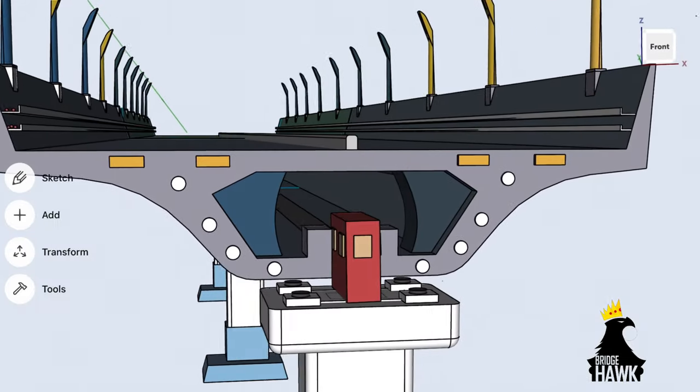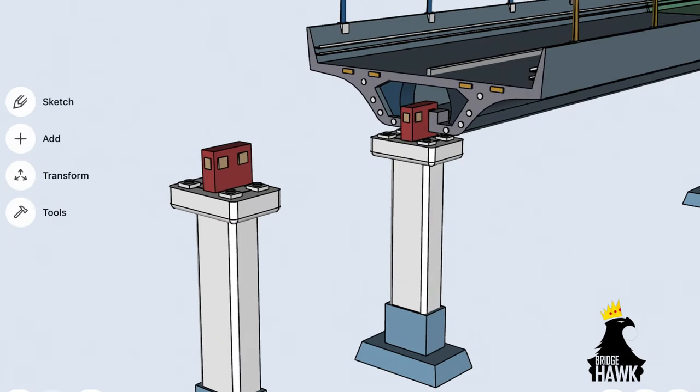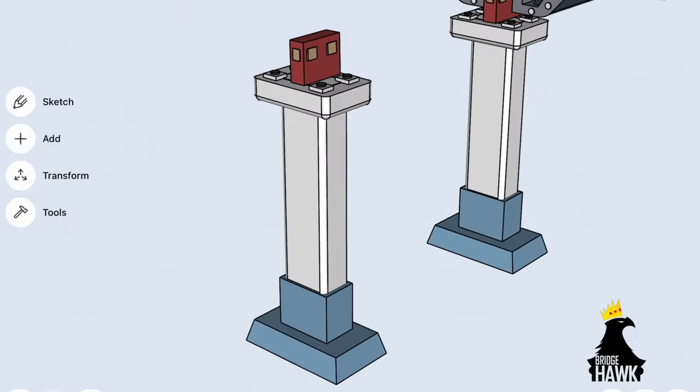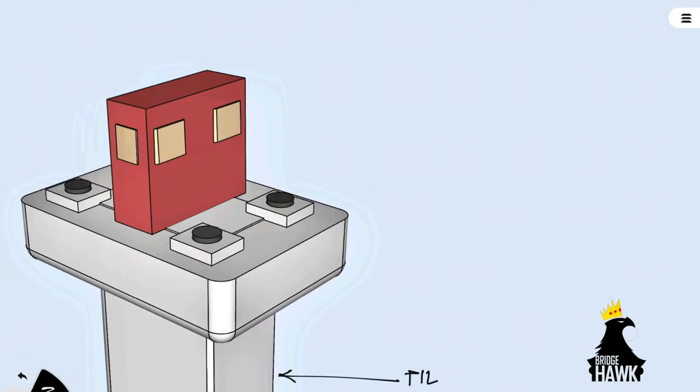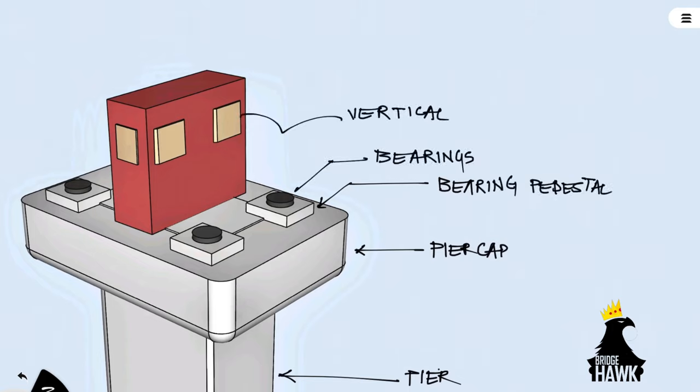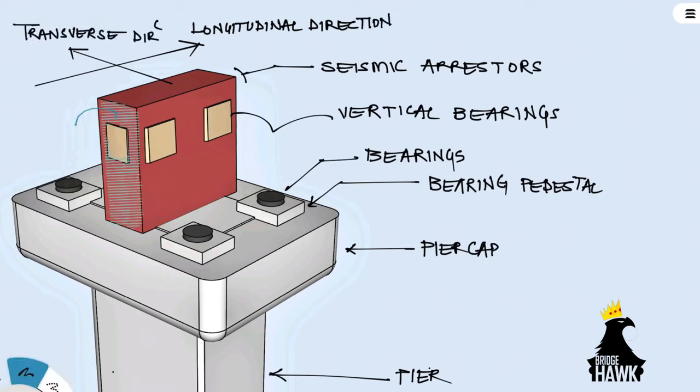Now let us look at the pier cap in a bit more detail. The components of the pier arrangement are usually same for almost all pier types with girders. The directions in respect to the seismic arrestor are indicated here. The transverse and longitudinal faces of the arrestor are important when designing the type of arrestor, as we shall see ahead.